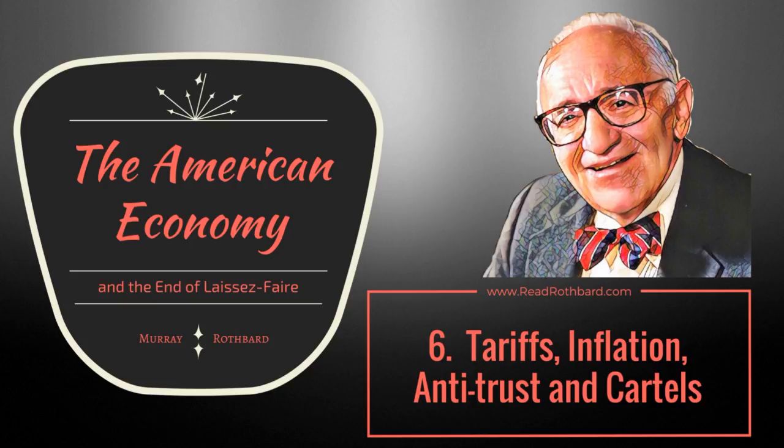Same thing happens with the gunpowder trust — another not-too-well-studied trust. The DuPont Company, which had always been the major gunpowder company before they were producing nylons, started as arms and gunpowder manufacturers. DuPont led the way in 1872 to form a mighty 43-corporation merger — a mighty gunpowder trust. They built it not by predatory price cutting but simply by buying competitors out at very high fees. But their share of the market began to collapse.